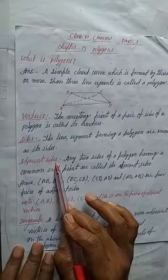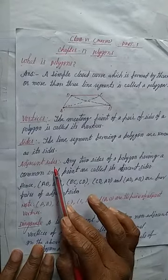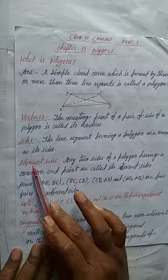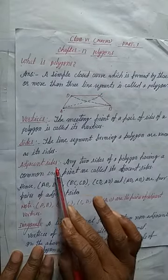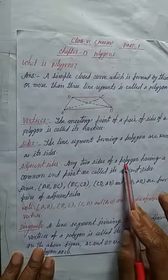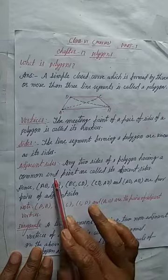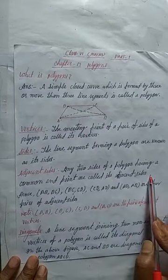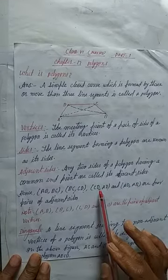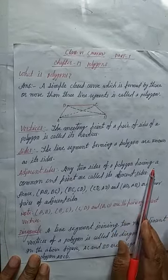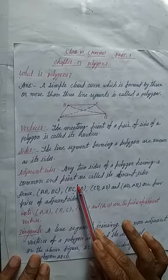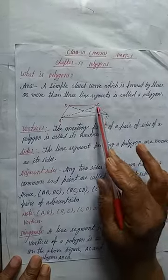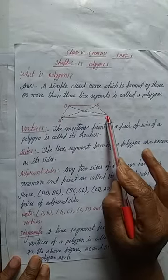Now, adjacent sides. Sometimes students are confused about adjacent sides. You are in Class 6 and will study this in higher classes too, so keep this in mind. Any two sides of a polygon having a common endpoint are called its adjacent sides. For example, sides AB and BC have B as their common endpoint, so they are adjacent sides.